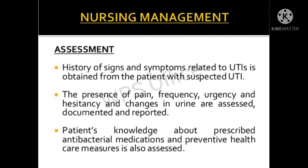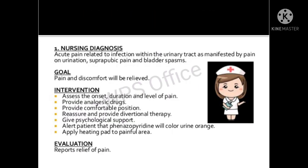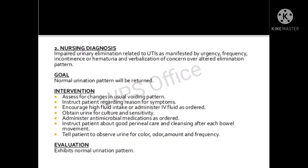In nursing management, assess for signs and symptoms including pain, frequency, urgency, and changes in urine. Check that patients are compliant with prescribed antibacterial medications. The first nursing diagnosis is acute pain — assess onset, duration, and level of pain; provide analgesics; provide a comfortable position; give reassurance and psychological support.